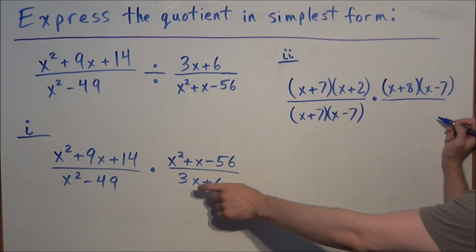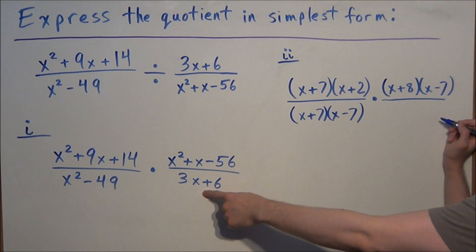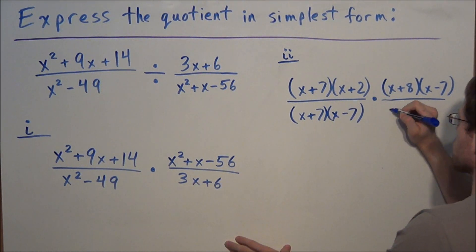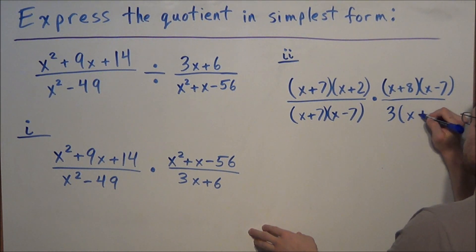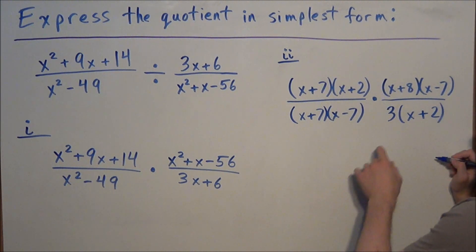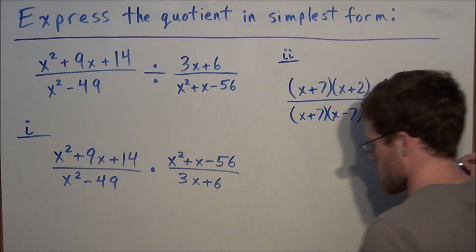Now for the last piece, the denominator of the second fraction, we're factoring out a greatest common factor of 3. If we divide the first term by 3, we have x. And we divide the second term by 3, we have positive 2. We could redistribute the 3 to check that 3 times x plus 2 equals 3x plus 6.